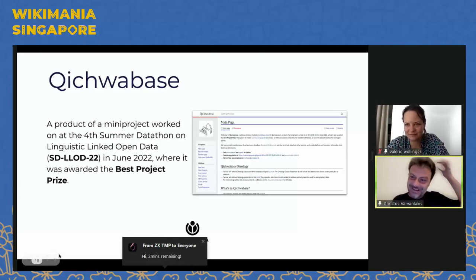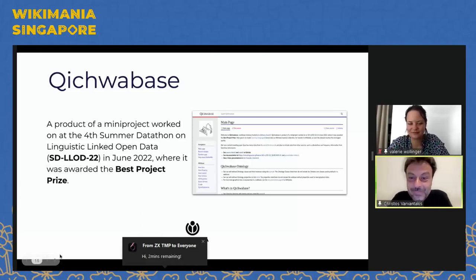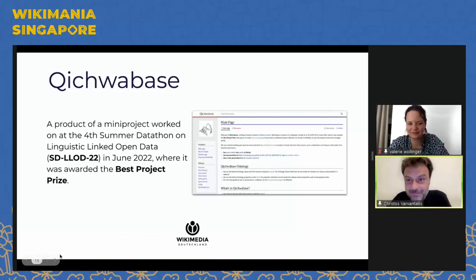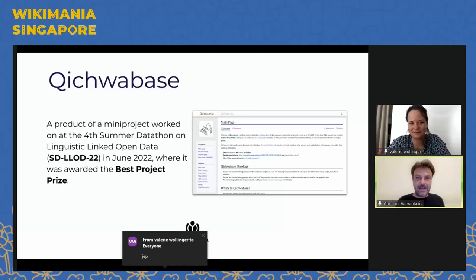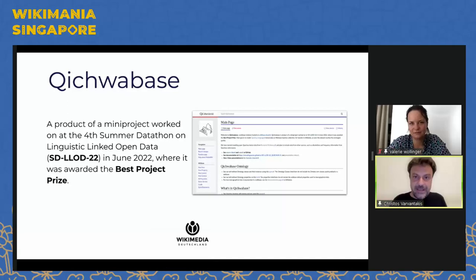The Kichua base is another example — a smaller Wikibase instance that is an attempt to document and create a comprehensive database of a traditional indigenous language, and this one is built on Wikibase Cloud.